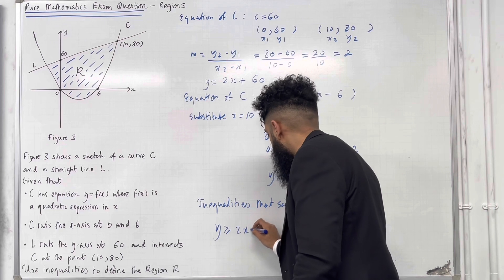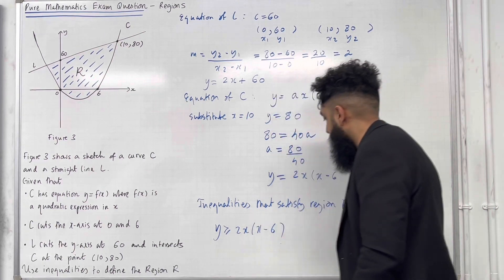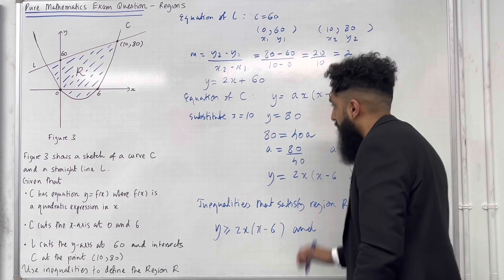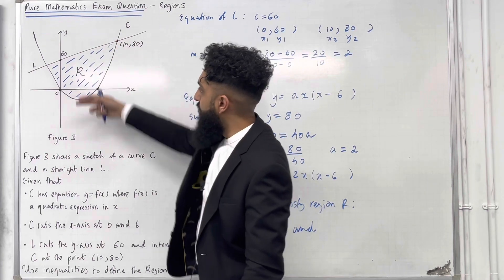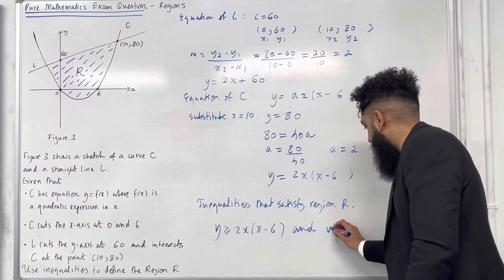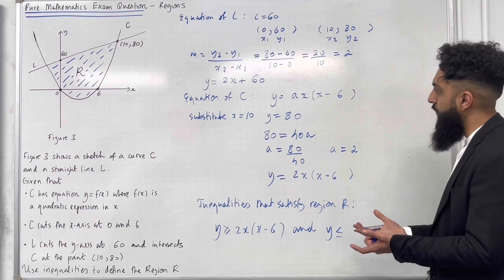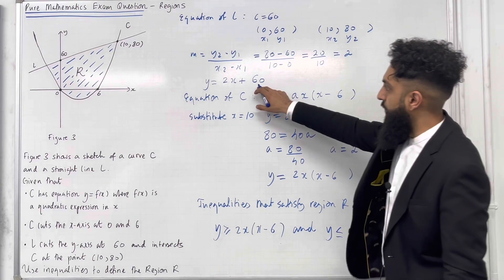So we've got Y is greater than or equal to the quadratic 2X X minus 6 in bracket and below or equal to the straight line. So Y is less than or equal to the straight line which is 2X plus 16.